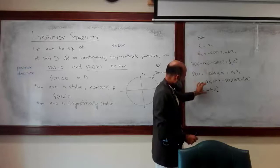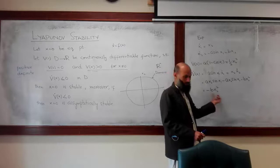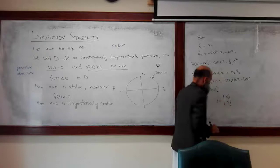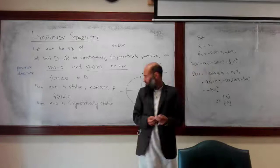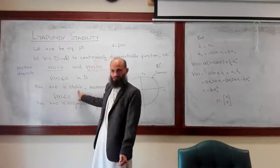We have computed the derivative of this candidate Lyapunov function along the system trajectories and came up with a result. This V̇ is either less than 0 or equal to 0 — equal to 0 for any value of x1 when x2 = 0. So it is less than or equal to 0; it cannot be greater than 0. The conclusion is that the equilibrium point at the origin is stable.